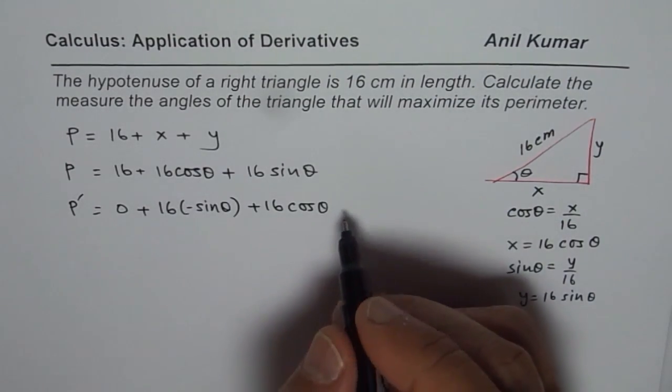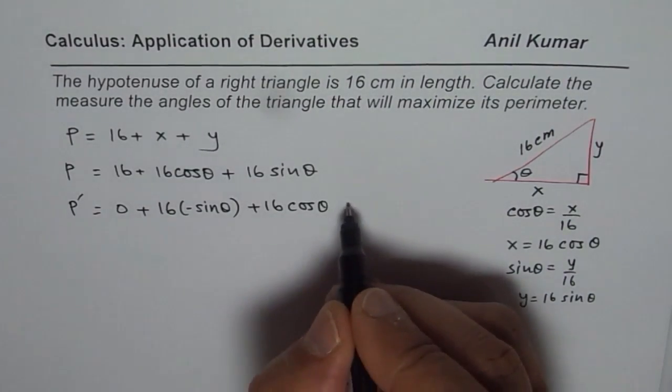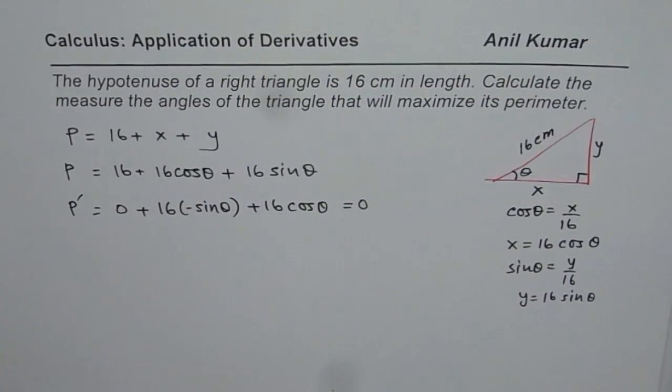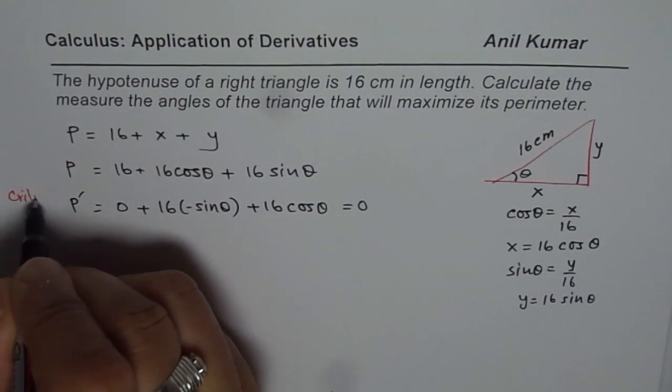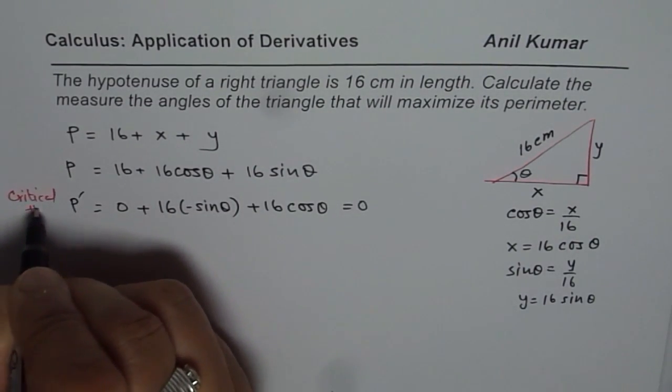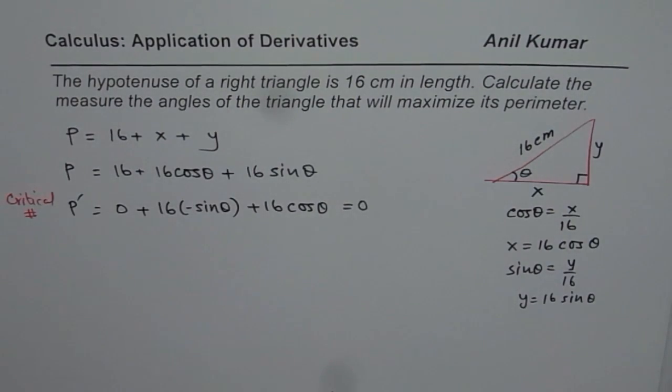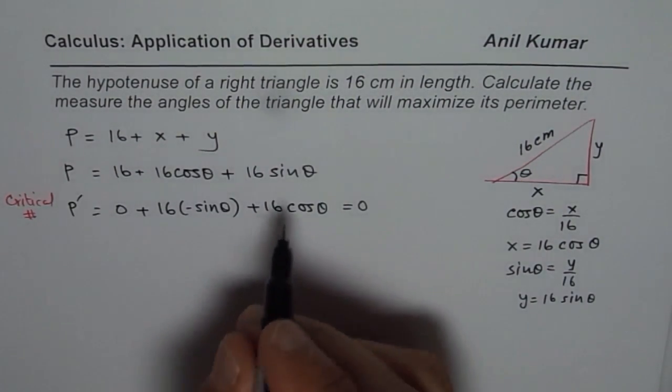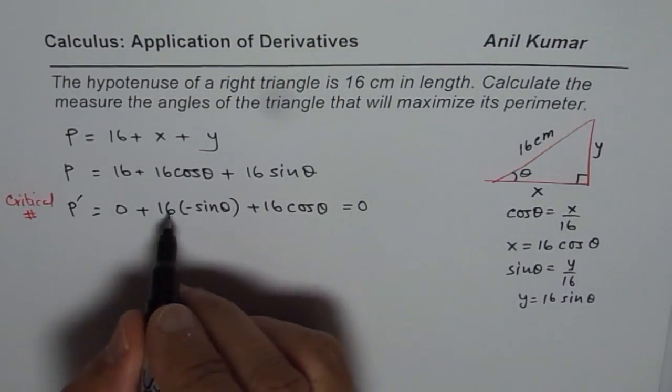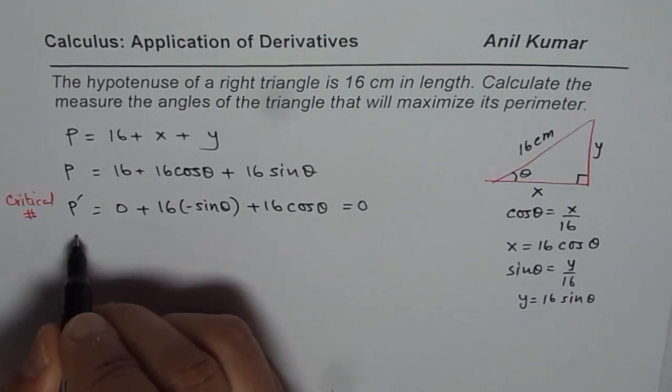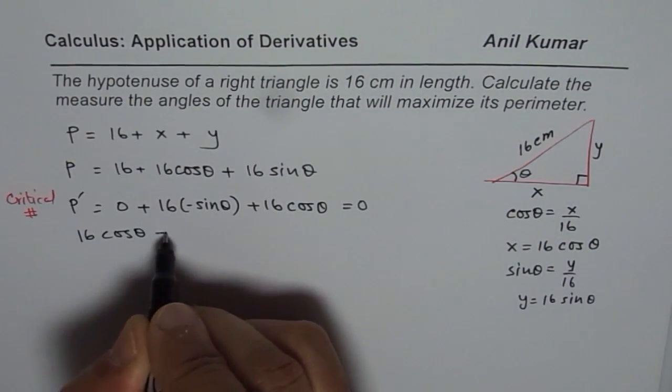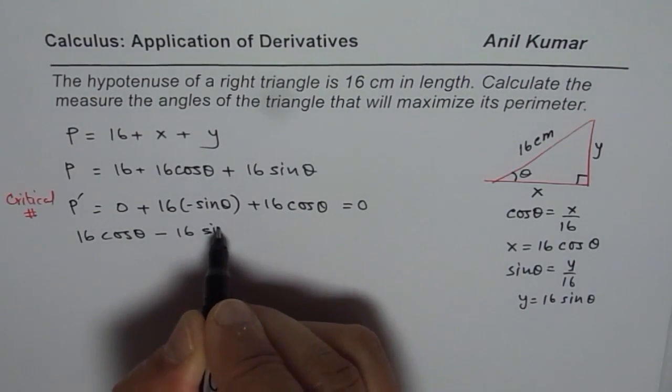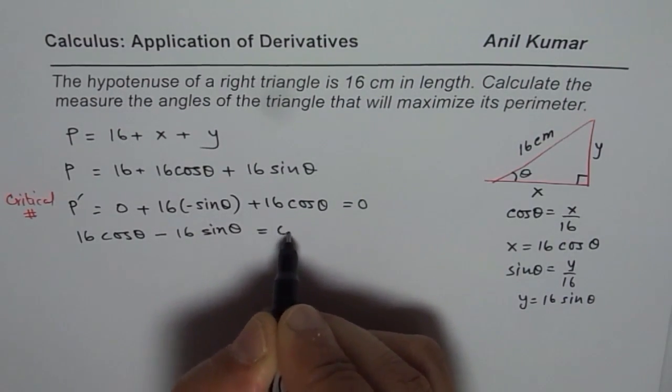To maximize or minimize, we need to equate the derivative to 0 and find critical number. So, that gives us the critical number. 16 cos theta minus 16 sin theta equals 0. 16 cos theta minus 16 sin theta equals 0. 16 cos theta equals 16 sin theta.